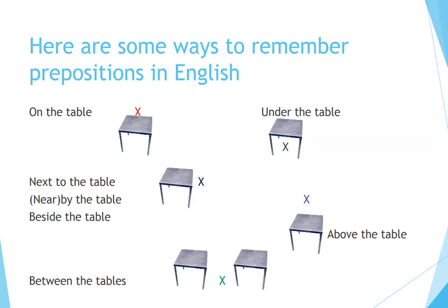Here are some ways to remember prepositions in English. 'On the table' means on top of the table and it's usually touching the table. 'Under the table' means it's below the table — you look down to see it. 'Next to the table,' 'near the table,' or 'by the table' means it's close to the table and doesn't have to be touching it. 'Above the table' means it's higher than the table but not touching it. 'Between the tables' means it's in the middle of two tables.